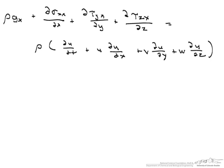And this has to equal rho du dt plus u du dx plus v du dy plus w du dz. So this part right here are the sum of the forces in the x direction, and this part right here is the acceleration in the x direction, where this is the local acceleration and these are the convective terms.